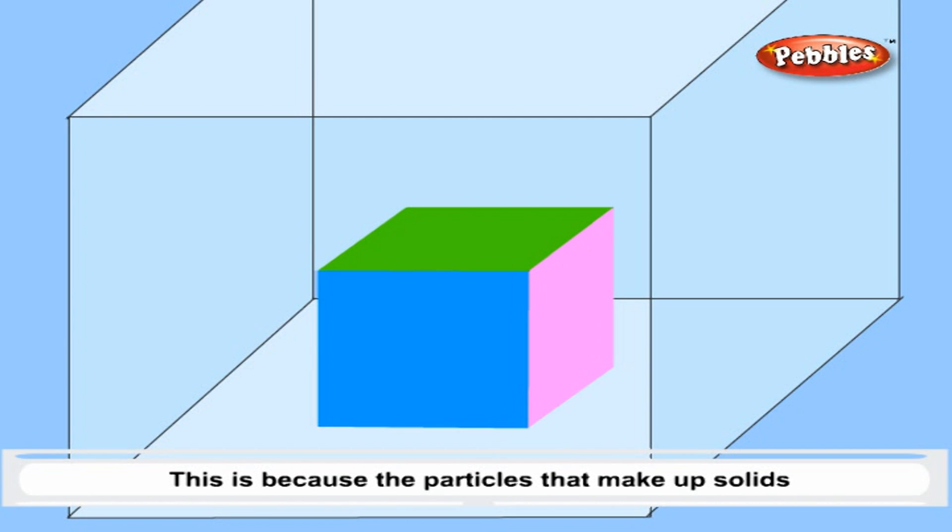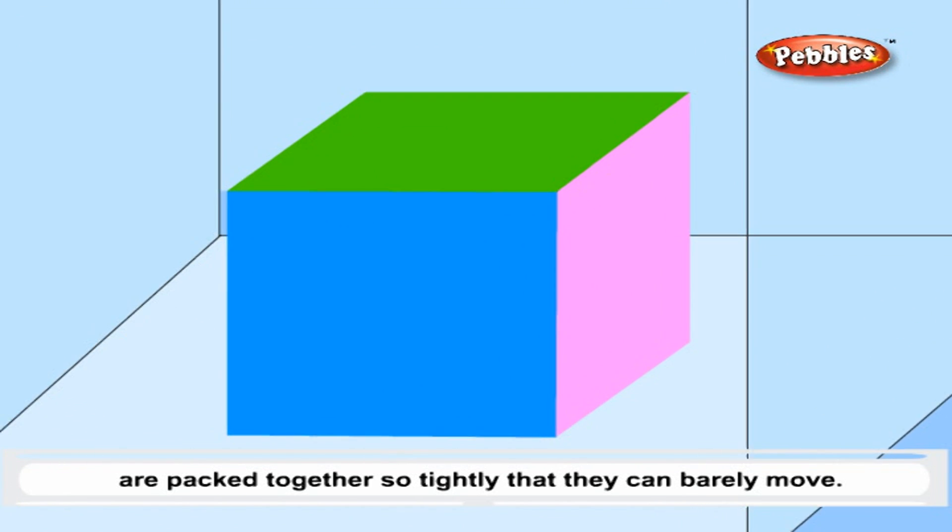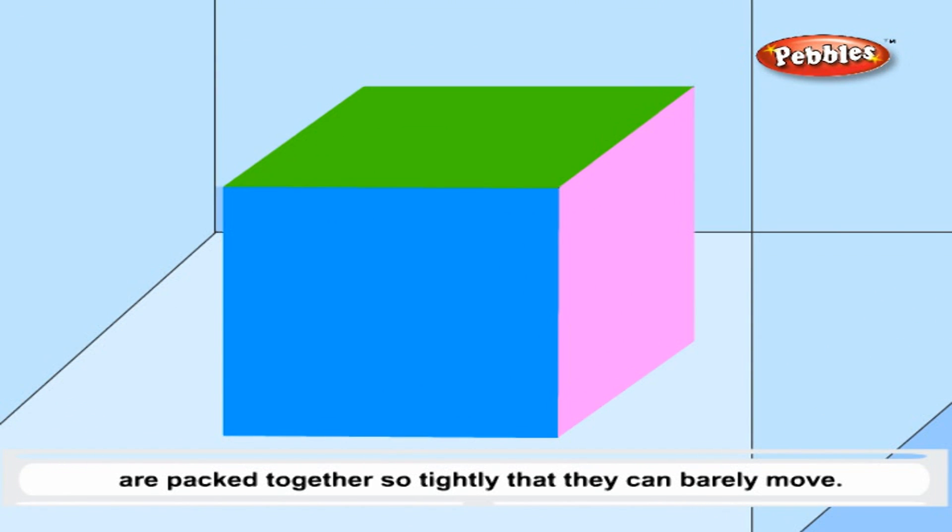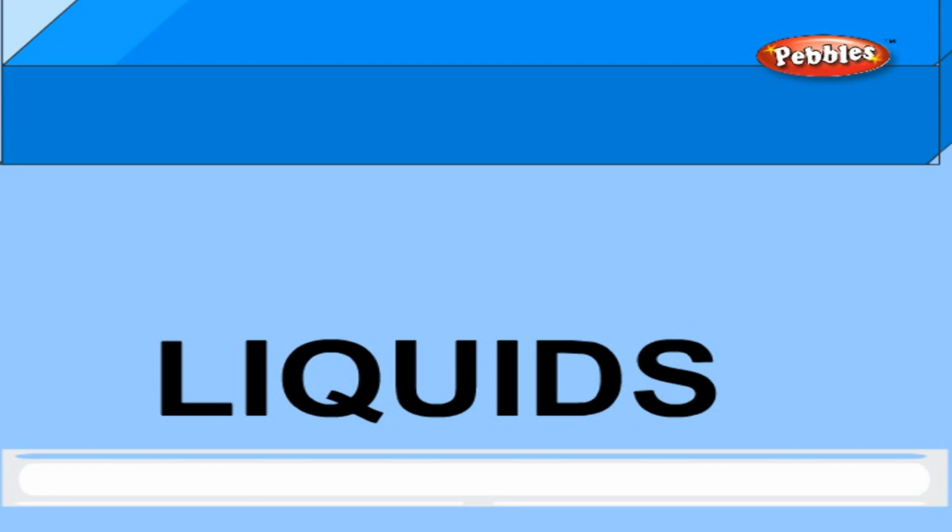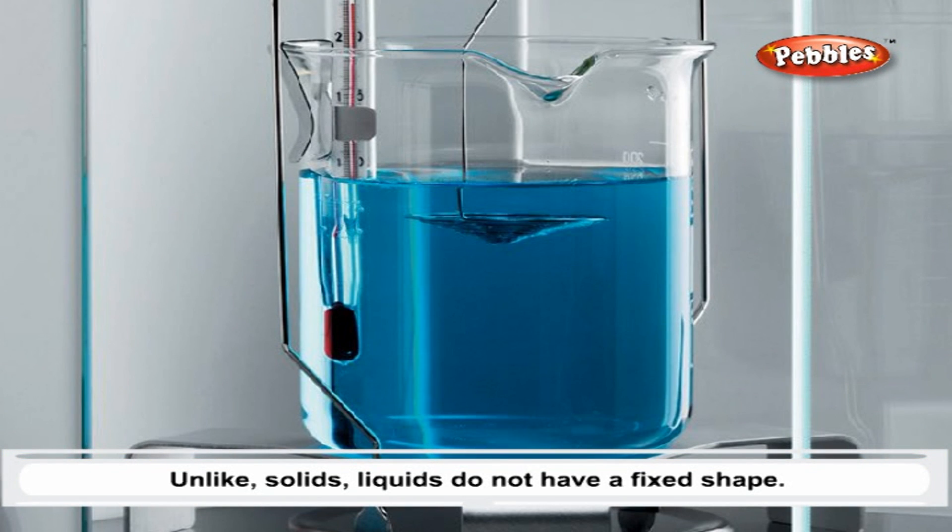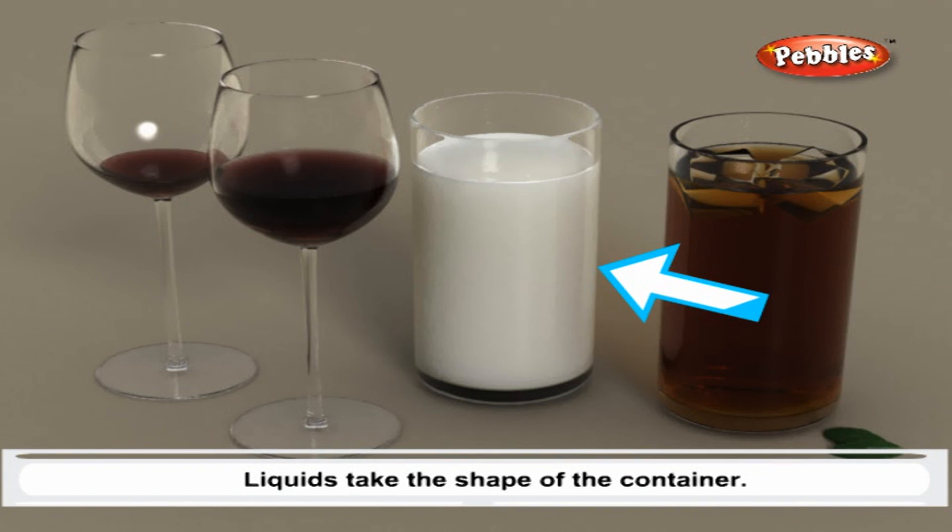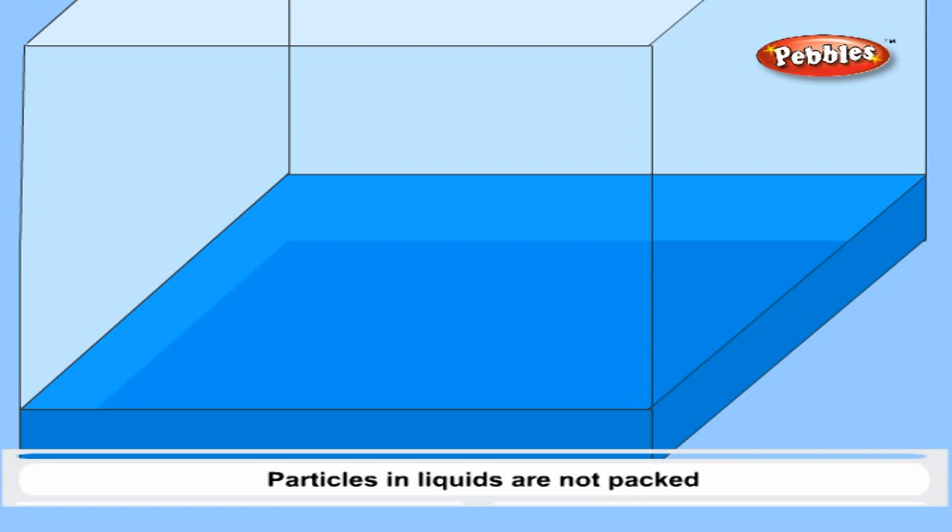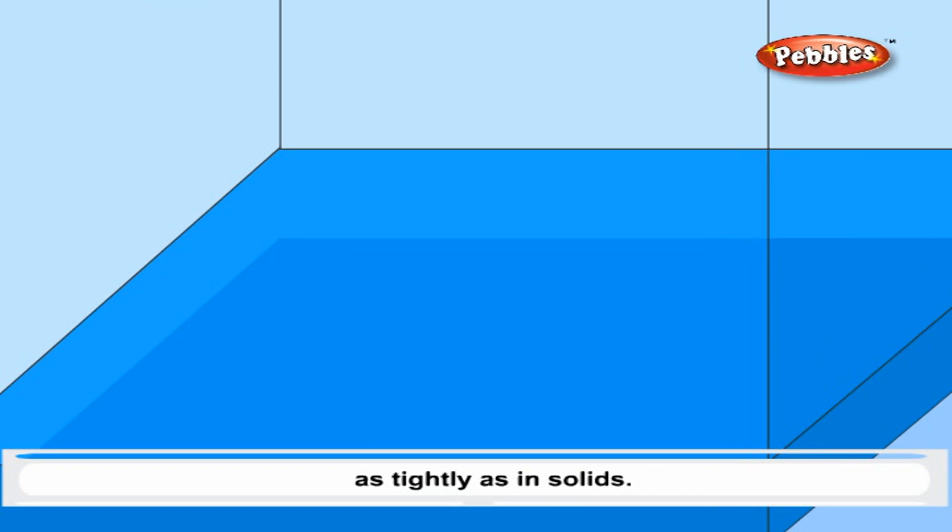Liquids. Unlike solids, liquids do not have a fixed shape. Liquids take the shape of the container. Particles in liquids are not packed as tightly as in solids.